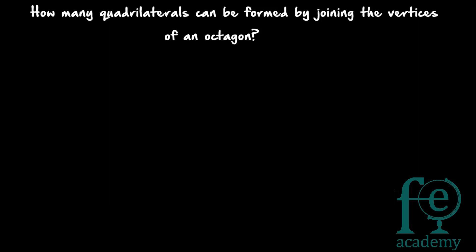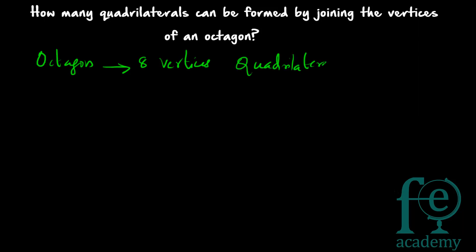You are having an octagon. An octagon will be having how many vertices? An octagon will be having 8 vertices. So by joining the vertices of an octagon, you have to form a quadrilateral. How many vertices does a quadrilateral have? A quadrilateral will be having 4 vertices. So from 8, you have to take 4 at a time to form a quadrilateral, and you know the order does not matter.